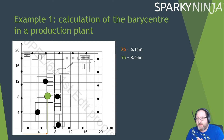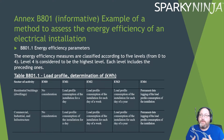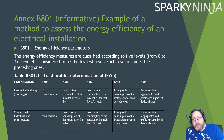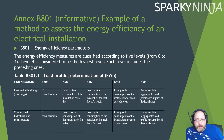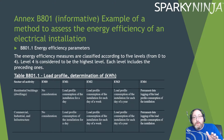Moving on, Annex B801 covers the example of a method to assess energy efficiency of an installation. The energy efficiency measures are classified according to five levels — zero to four — where level four is the highest. Each level includes all preceding ones, so a higher number is better. If you're doing nothing to achieve an energy efficient measure, you get a zero.